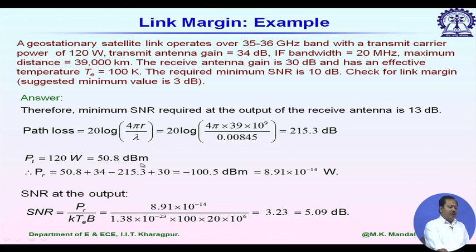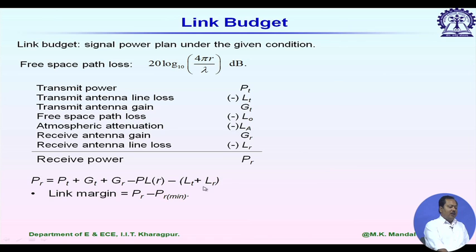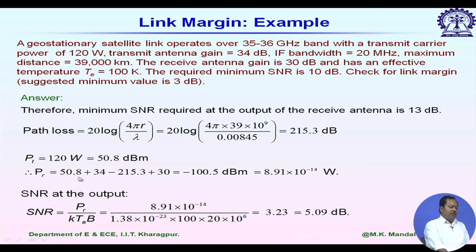The received power is calculated using the link budget formula. Since no values are given for Lt and Lr, we assume them as zero. Putting in the values, the received power comes to minus 100.5 dBm, which converts back to 8.91 × 10^-14 watts — an extremely small value, as expected for a satellite link 39,000 kilometers away.